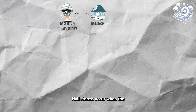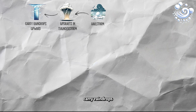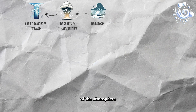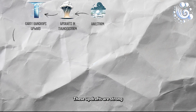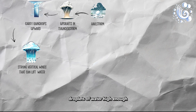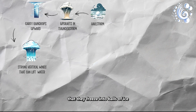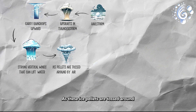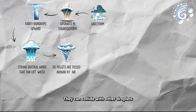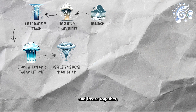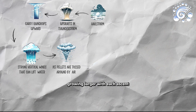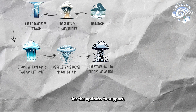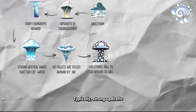Hailstorms occur when updrafts in thunderstorms carry raindrops upward into extremely cold areas of the atmosphere. These updrafts are strong vertical winds that can lift droplets of water high enough that they freeze into balls of ice. As these ice pellets are tossed around in the cloud by turbulent air, they can collide with other droplets and freeze together, growing larger with each ascent. Once these hailstones become too heavy for the updrafts to support, they fall to the ground as hail.